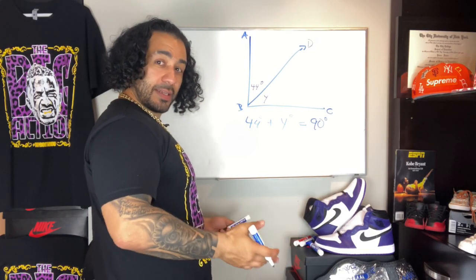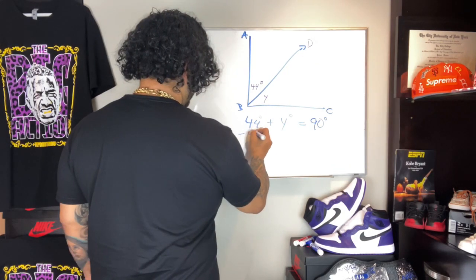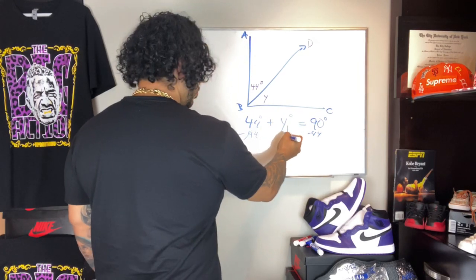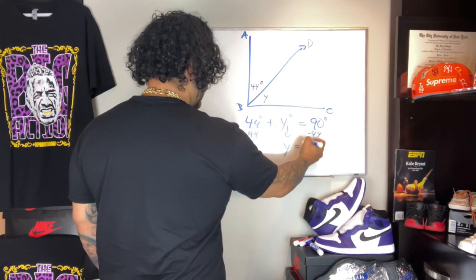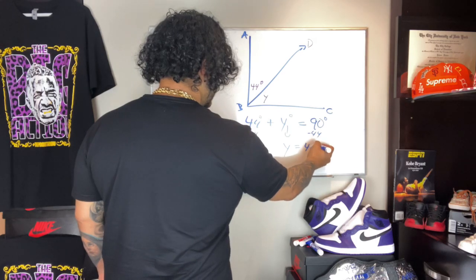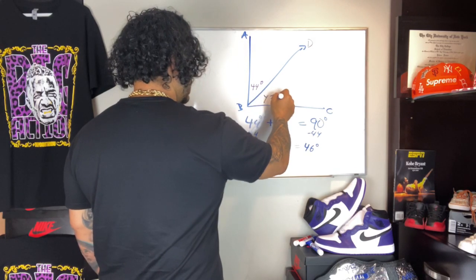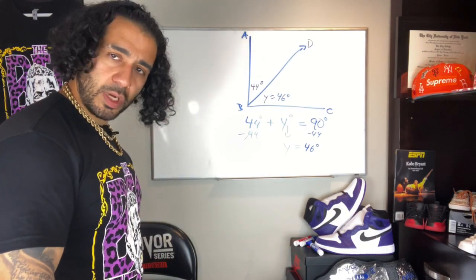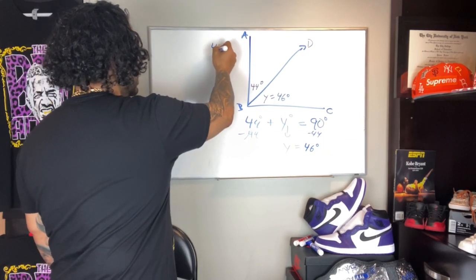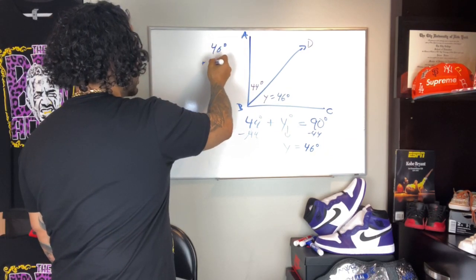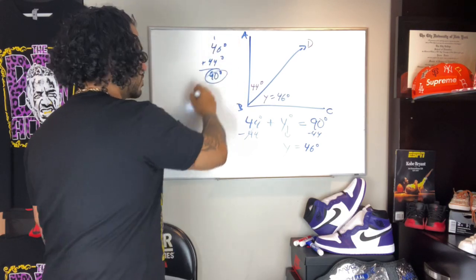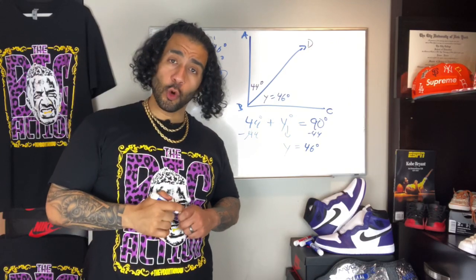44 degrees plus Y degrees equals 90 degrees — that's the complement. I'm gonna take away 44 degrees from both sides, cancel it out, bring down Y, and 90 take away 44 degrees is 46 degrees. So Y equals 46 degrees. How do we verify? We check our work: 46 plus 44 — carry the one — equals 90 degrees. There you have part two of how to do complementary angles!